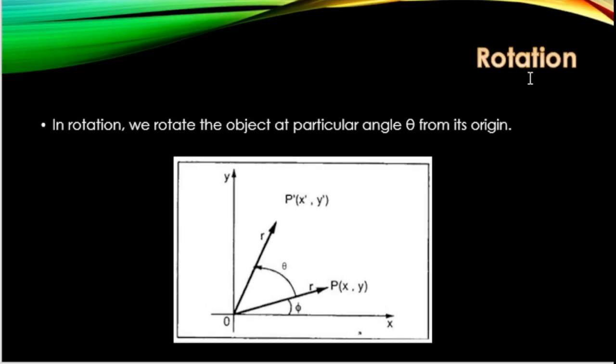What is rotation? In rotation, we rotate the object at a particular angle θ from its origin. You can rotate an object that has some distance from the origin to another angle.